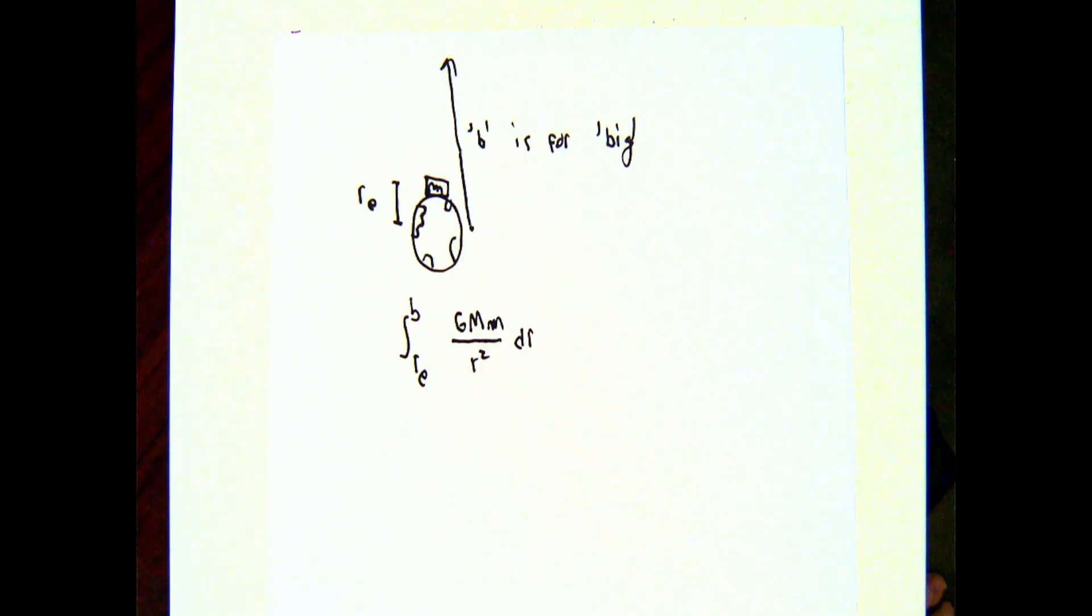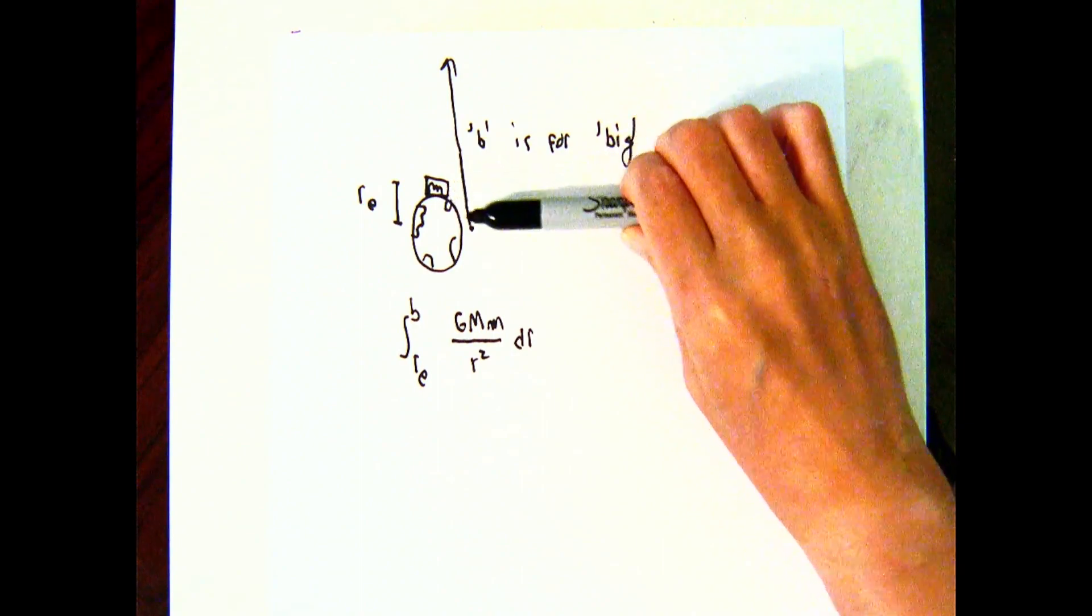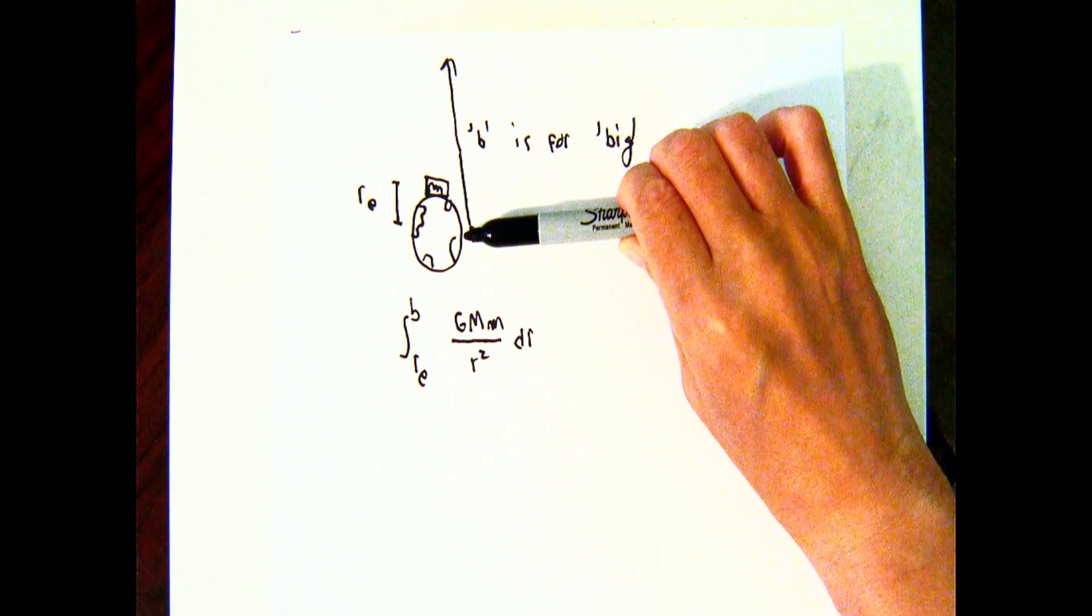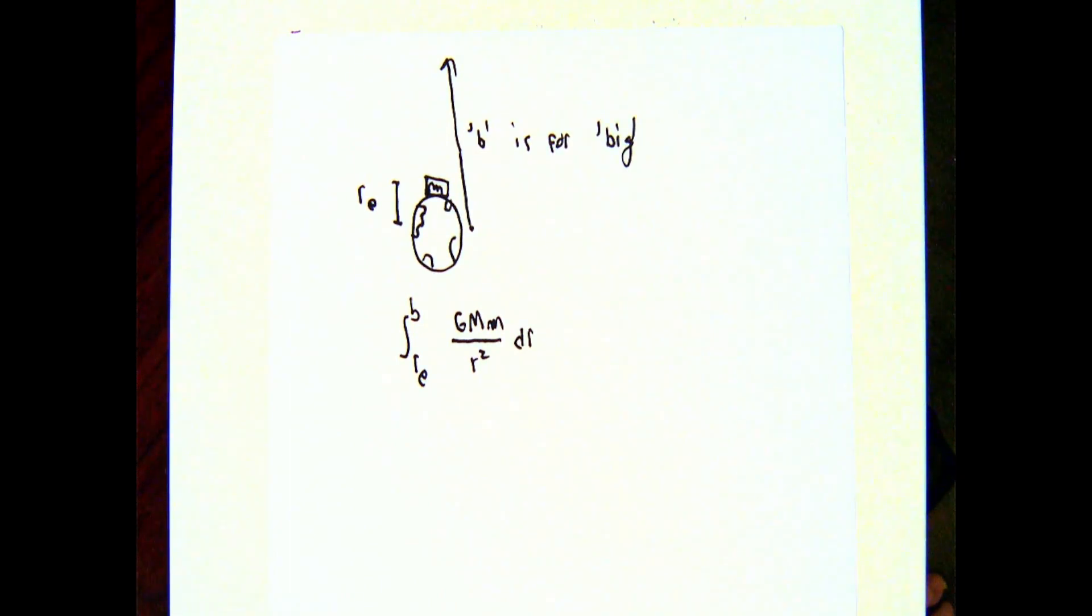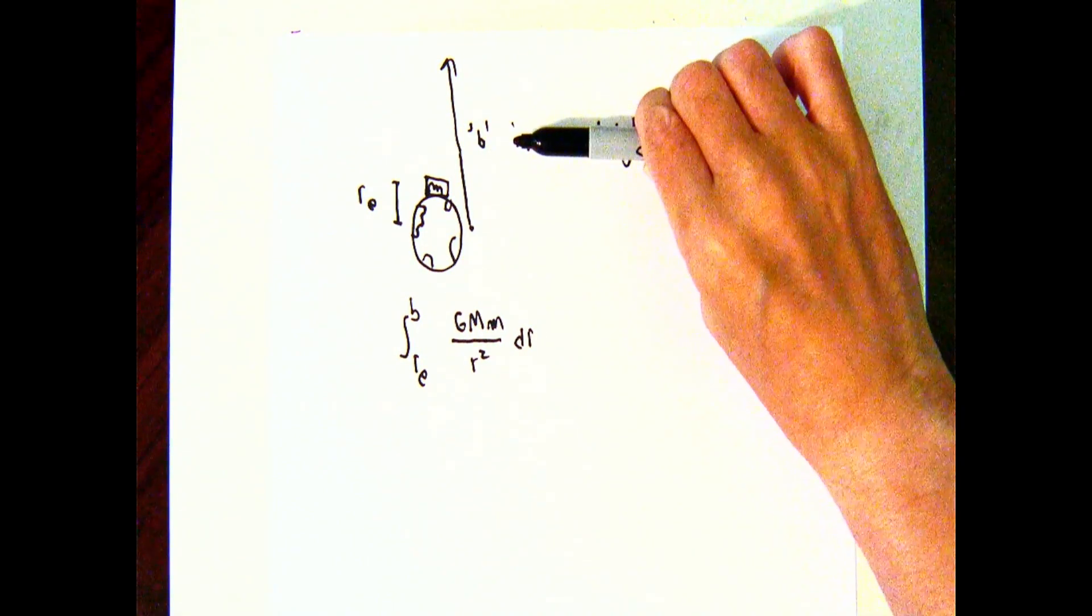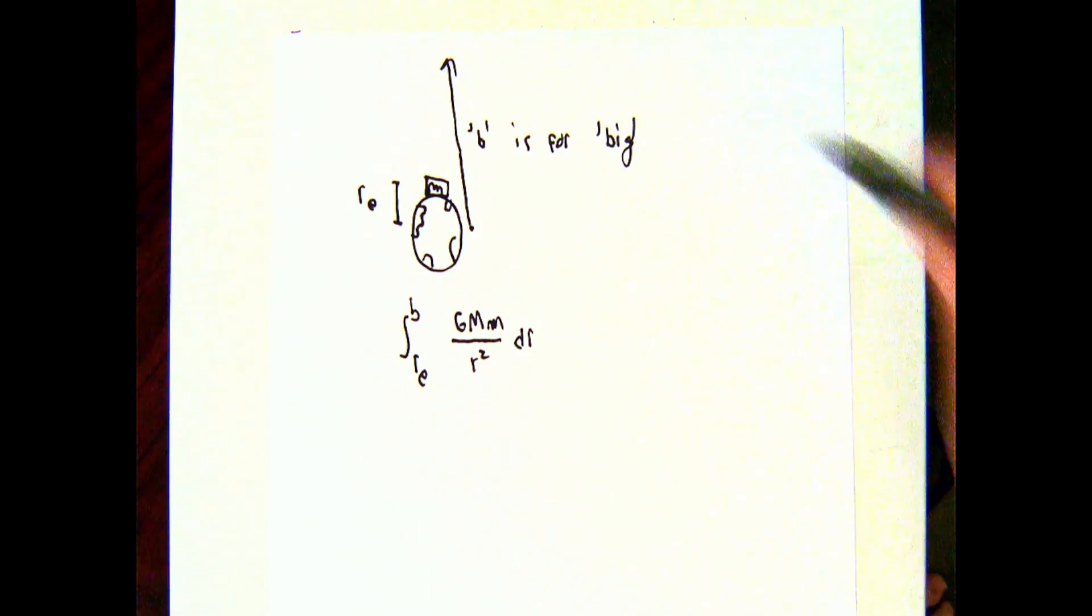As a minor variation on a theme of this, imagine that I have some object with mass m sitting on the surface of the Earth, whose radius I'm going to call r sub e, radius of Earth. I want to change the location of this object from r equals r sub e to some larger radial value, which I'm just going to call b. b is big. Now obviously, as b gets bigger, it's going to take more work to lift the object to that location. I want to look into how much exactly.